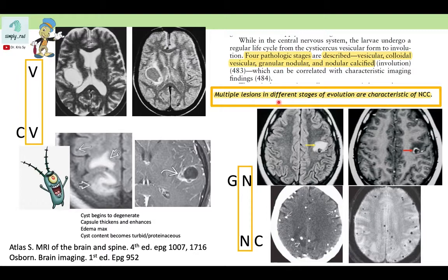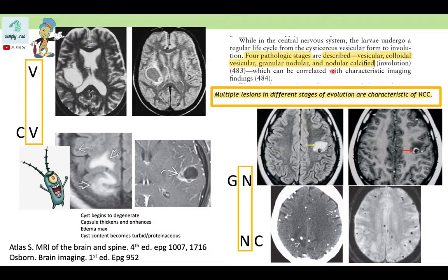There are four pathologic stages, which can be confusing on exams: vesicular, colloidal vesicular, granular nodular, and nodular calcified. Think of it as a story: initially the larva is quiet (silent bug stage); then it dies and becomes the colloidal vesicular stage; then the body begins winning in the granular nodular stage with less edema; and finally the body wins completely, leaving scattered calcified foci.